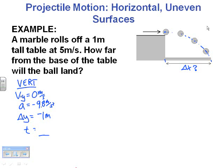Let's look at that X information. So, horizontally, what do you know? Well, you know that you rolled off the table at this rate of 5 meters per second. You'd like to know where you land, delta X, question mark.